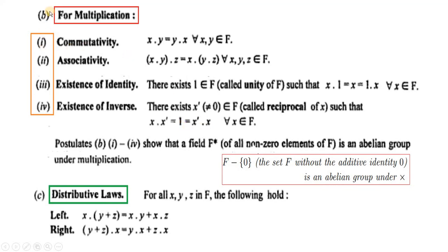یہاں پہ چار properties ہو گئیں اور closure property of multiplication ملا کے پانچ properties ہو گئیں۔ Postulate B میں ایک سے چار properties ہیں اور پہلی slide میں closure property تھی۔ F* (all non-zero elements of F) is an abelian group under multiplication۔ F minus {0} میں closure، commutative، associative، existence of identity اور existence of inverse ہے۔